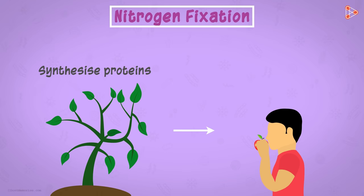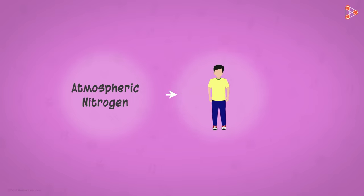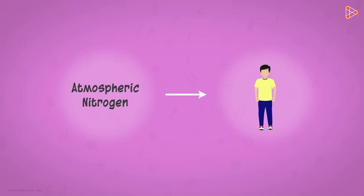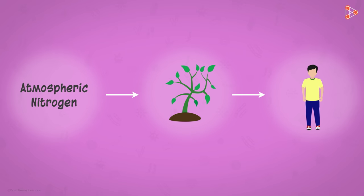Let me quickly recap what we learnt. Humans need nitrogen, but they can't take it directly from the atmosphere. Hence they get it from the plants.